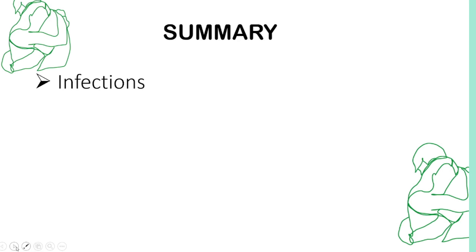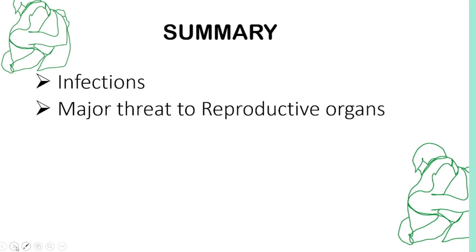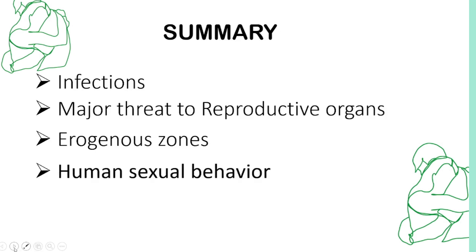That's the end of this topic. In summary, we discussed: first, infections; then major threats to reproductive organs; then erogenous zones; and finally, human sexual behavior.